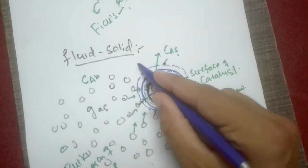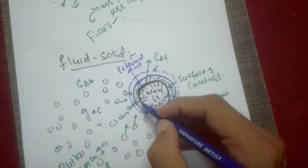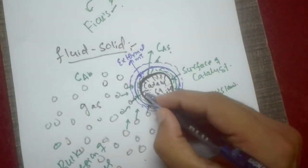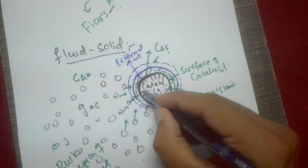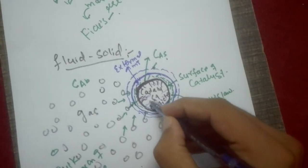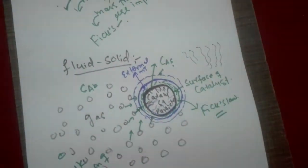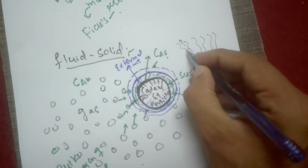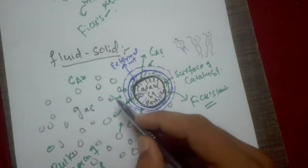This diffusion is called external mass transfer. Once the molecule reaches the surface, it transfers from the surface to the inside of the porous catalyst. The molecule goes through this porous path, and this porous path is not straight — it is a tortuous, irregular path. This irregular path is known as the tortuous path, or tortuosity of the path.